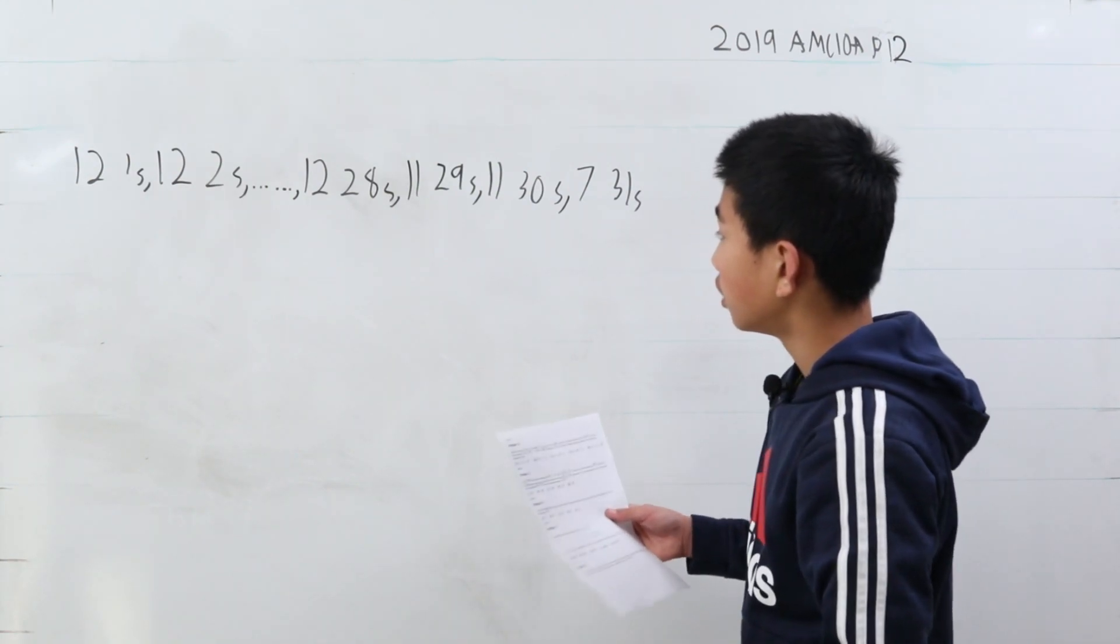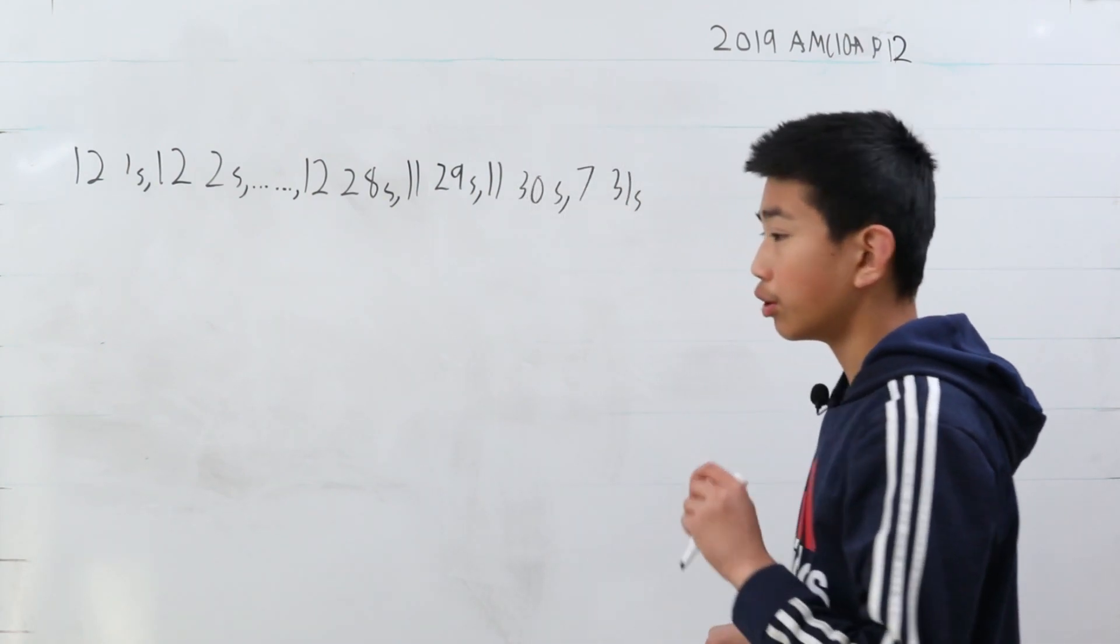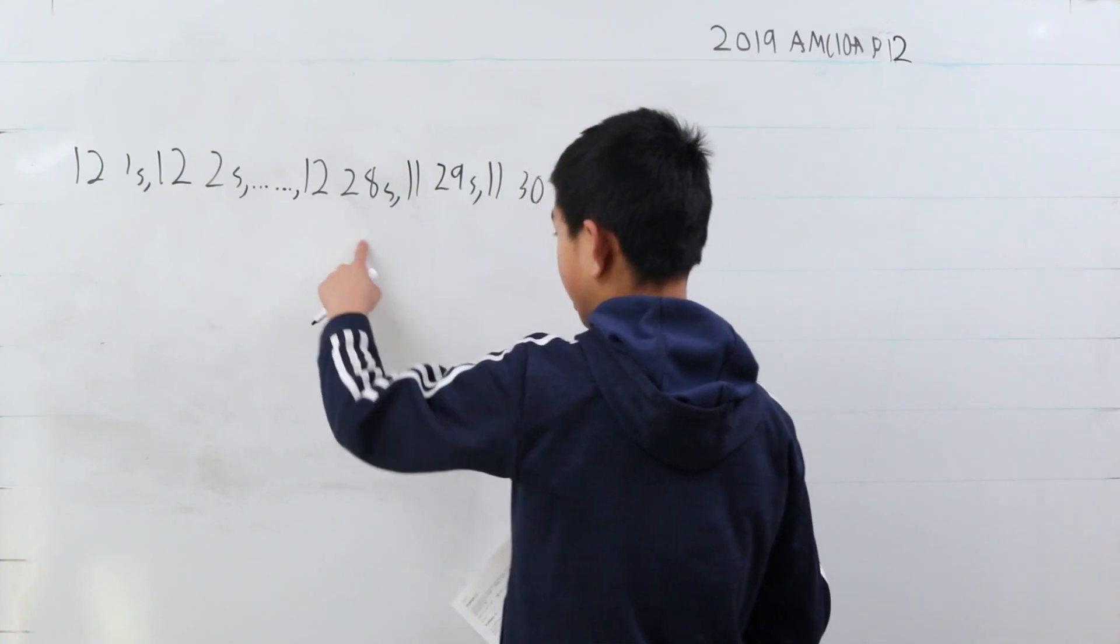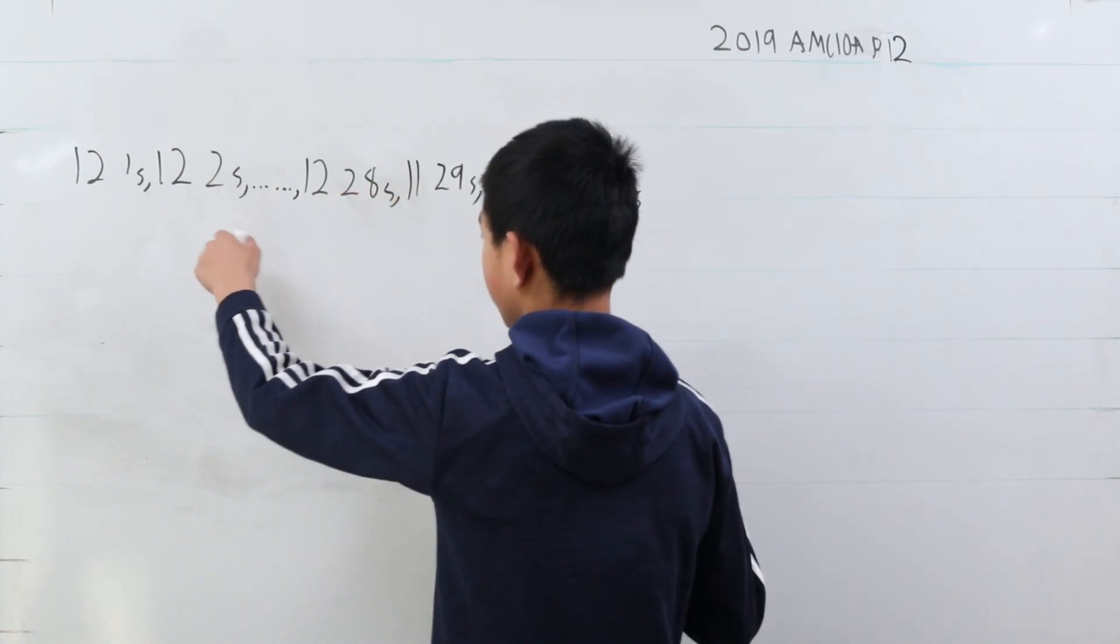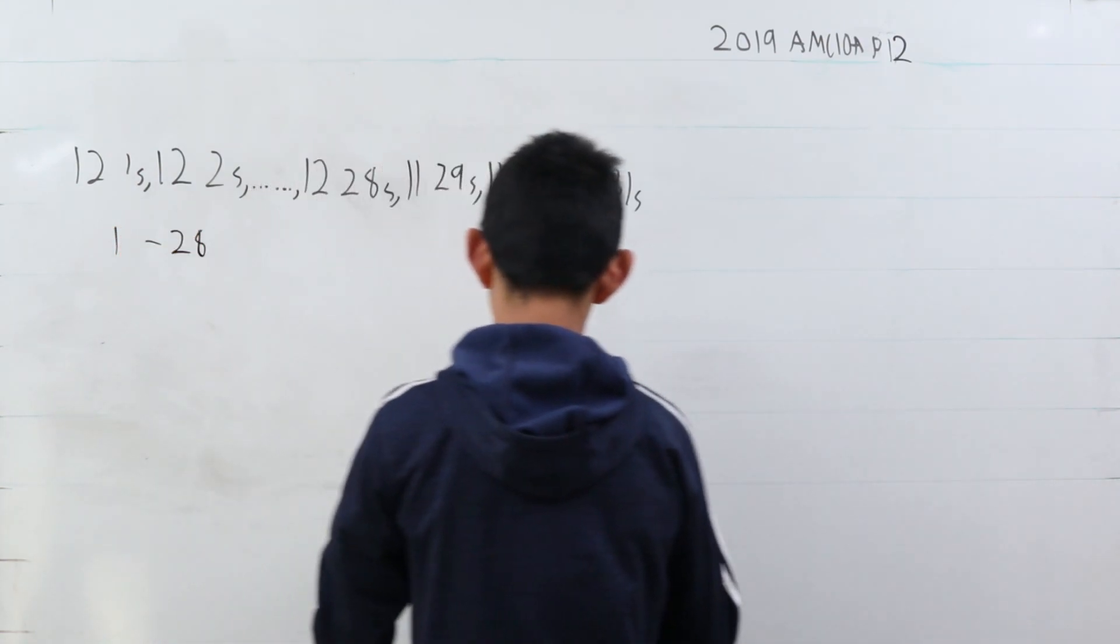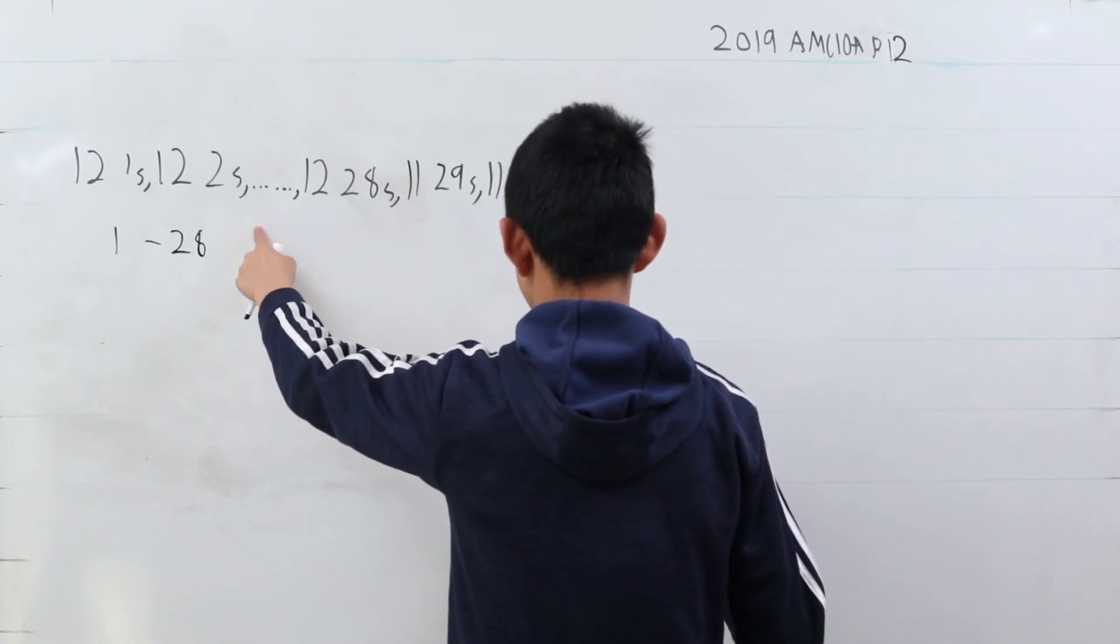Well, the mode is basically the set that has the most of itself. In this case, it's all these 12s here, from 1 to 28. So the median of the mode is going to be between 1 and 28, and right away we know that the median itself is going to be greater than d.